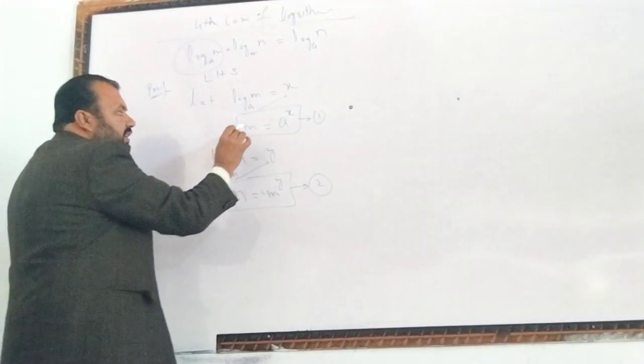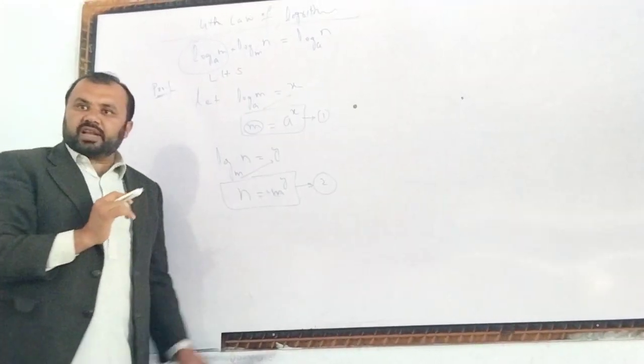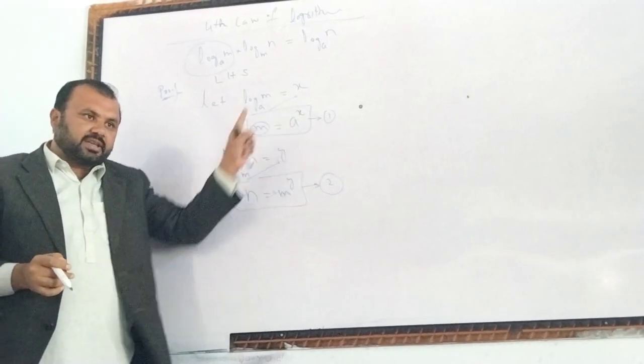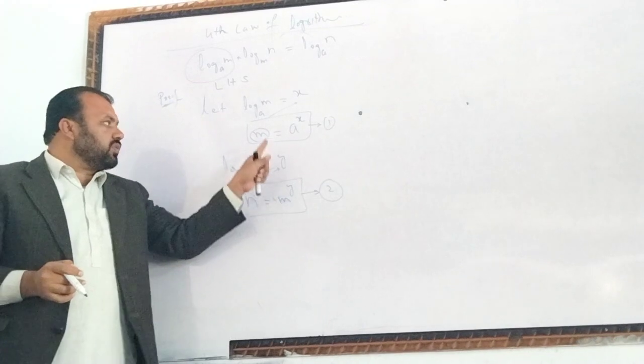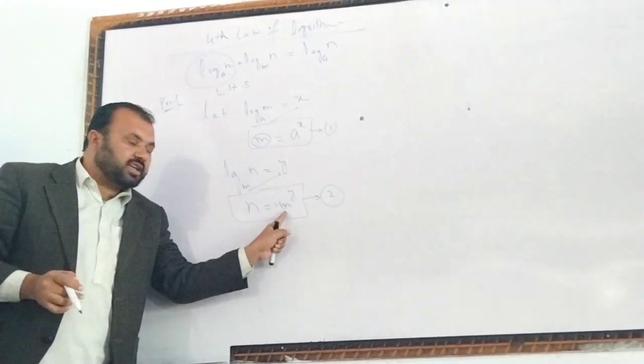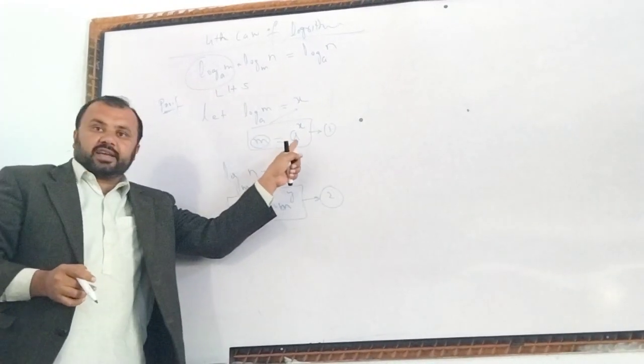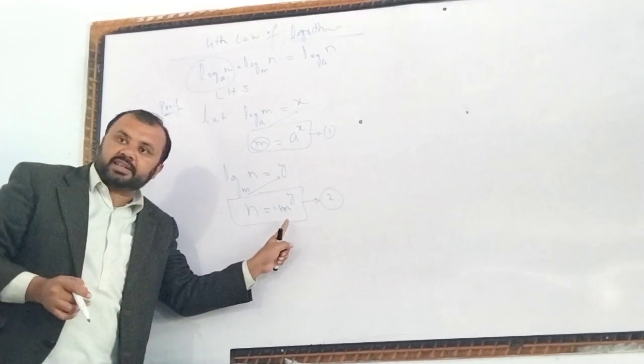Equation 1: N is A to the power X. Equation 2: N is A to the power X. You can say that it is A to the power X. That was our equation 2, where M was given.